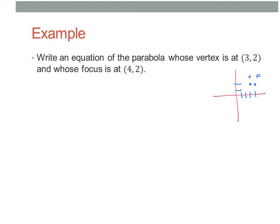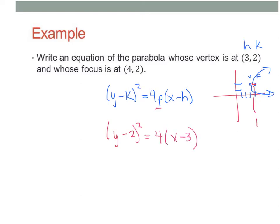So vertex, focus, that means this has to open to the right. So if this opens to the right, this has to be a y squared. And so what you just wrote down was y minus k squared equals 4p, x minus h. Your vertex is h, k. p is the distance from the vertex to the focus, so that distance is 1. So we get y minus 2 squared equals 4 times x minus 3. That's our equation.